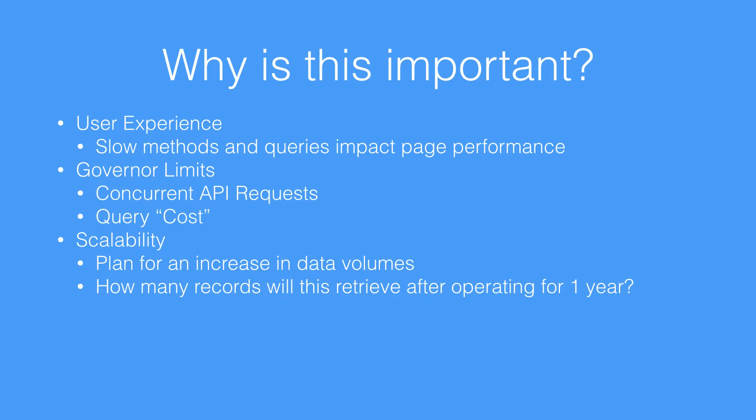If your query is inefficient, your reports, your list views, and more importantly your page methods are going to run slowly. If you have an Apex method that is doing a query and that query isn't very performant or optimized, your page will refresh slower, your page will run slower, and your users will experience that page slowdown. This can be an unknown bottleneck that stops people from wanting to use the system.